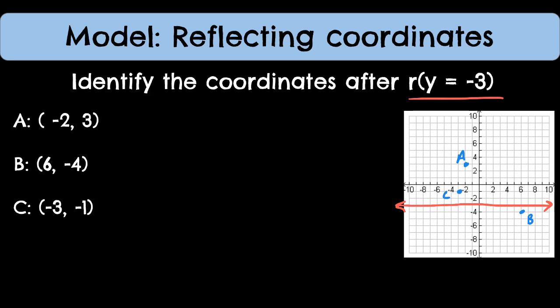Now what I'm going to do is take a look at the new points a prime, b prime, and c prime, and see if there's some sort of connection. Maybe I don't have to do this on a graph and I can just do it mathematically. Well, a is currently up here at 3, the line itself is at negative 3, so that's a distance of 6 away.